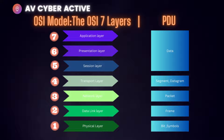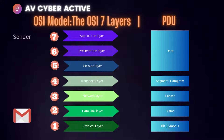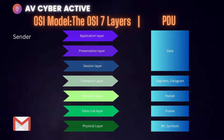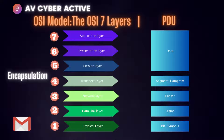How does this apply in the real world? Imagine you're sending mail or information from the application layer — for example, sending an email using a SaaS application like Gmail. You are the sender. Every time you send information, at each layer an additional header is added as it passes down. This process is called encapsulation.